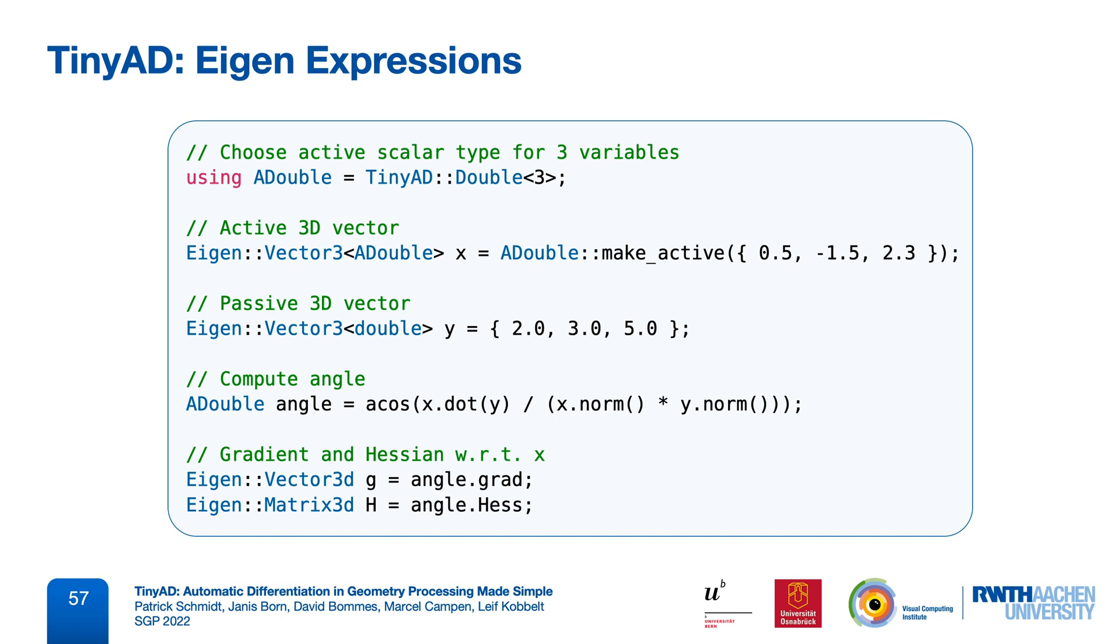From a user perspective, the big advantage is that all of this works natively in C++, without any external tools or custom compile steps. We just need to include a single header file. At runtime, this code will be very fast, because all computations can be inlined by the compiler, so both the matrix expressions by Eigen and the derivative code by TinyAD are visible to the compiler at once and can be optimized together.